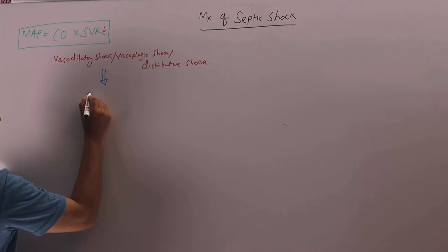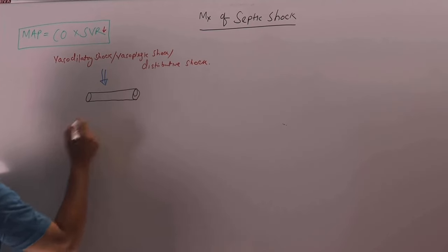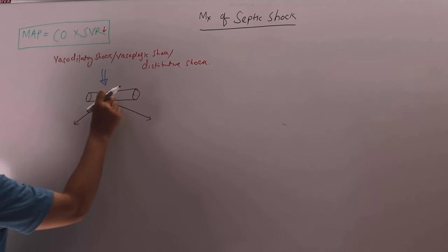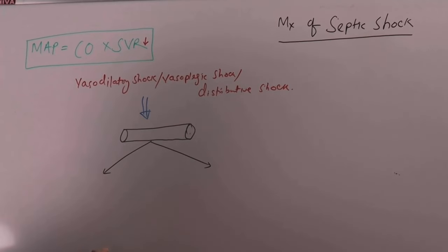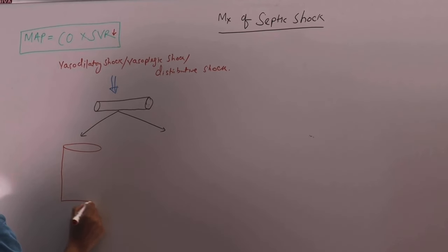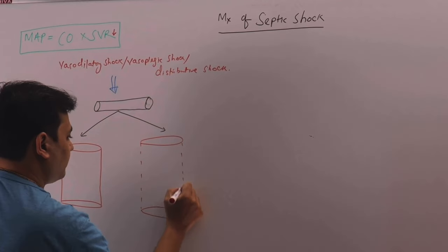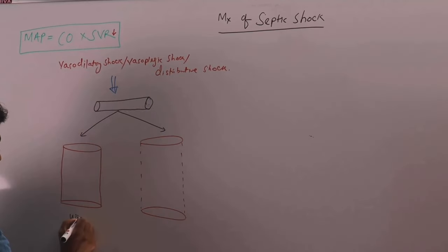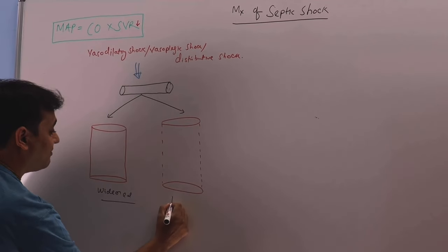This is the normal caliber of a vessel. What happens in septic shock? Two things happen. The caliber of the blood vessel widens, so it becomes a broader blood vessel. This is called a vasodilated state. And at the same time they become leaky. Widened blood vessel and it is a leaky blood vessel.